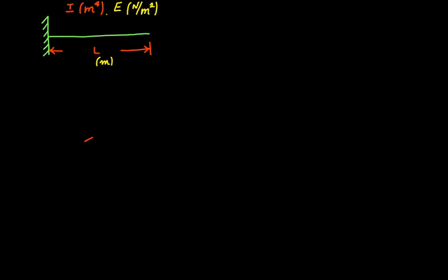I have clearly defined the geometric properties and the material property of this cantilever beam. Now, what is acting on this beam? Let us say this beam is subjected to a point load at the free end. A point load is a solid chunk of load assumed to act at a particular point — in our case, at the free end of the beam, not spread over a certain area.